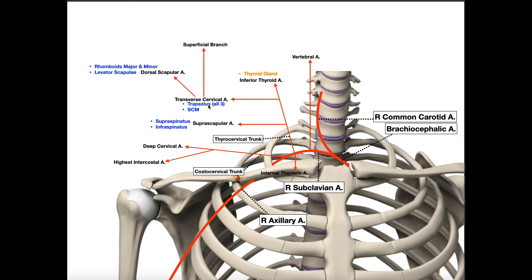The transverse cervical artery gives off a superficial branch, and in some individuals it also gives off the dorsal scapular artery. The dorsal scapular artery supplies the rhomboid major, rhomboid minor, and levator scapulae — muscles also innervated by the dorsal scapular nerve. About 25% of individuals will have this artery branching from the transverse cervical artery.